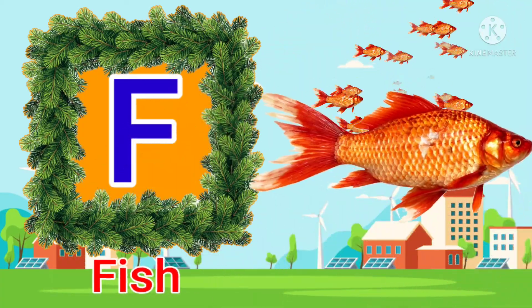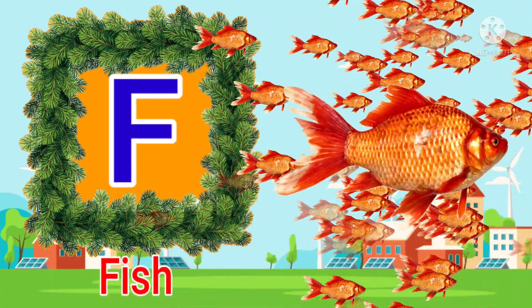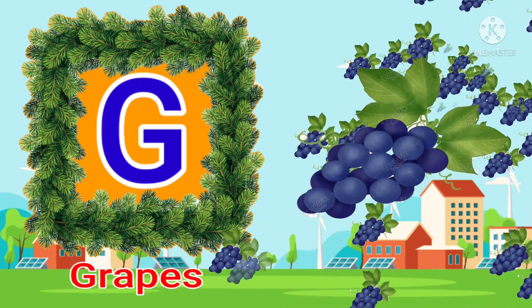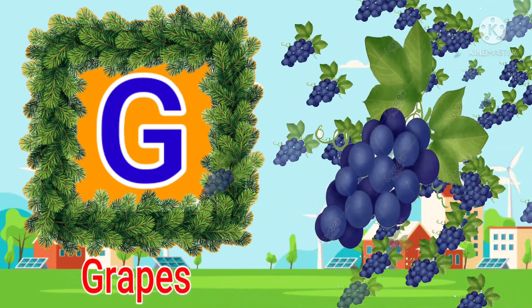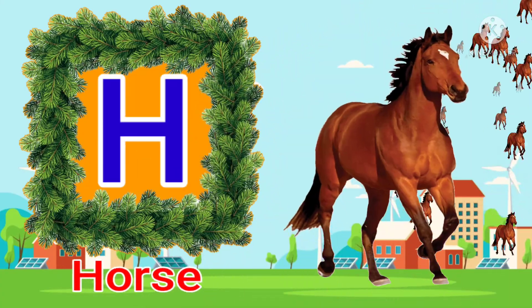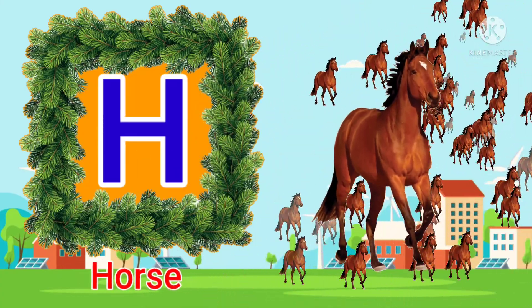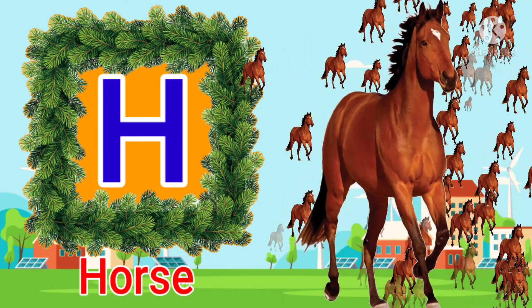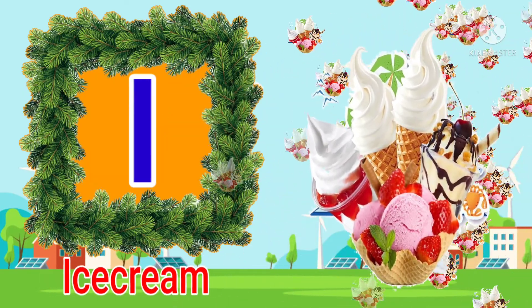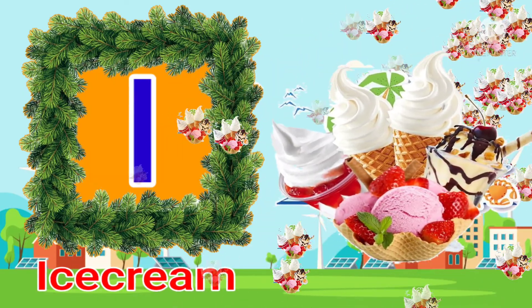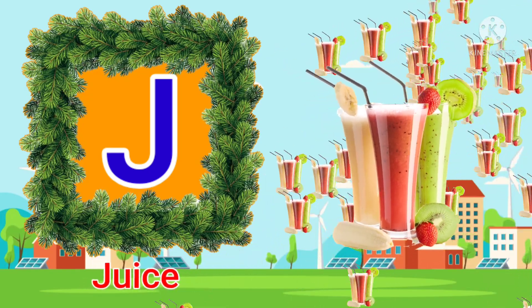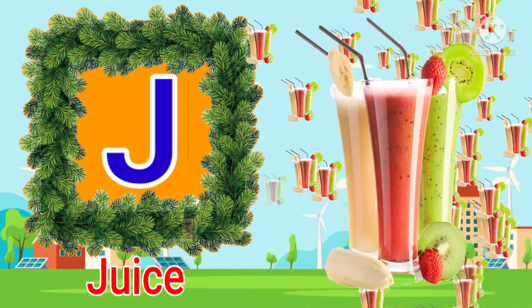F for fish, G for grapes, H for horse, I for ice cream, J for juice.